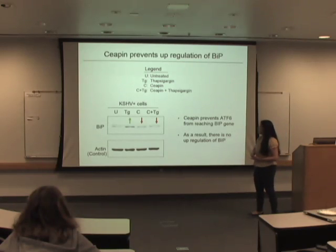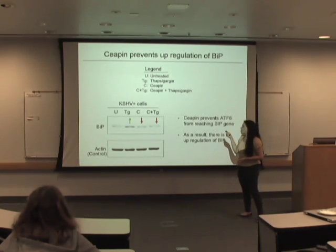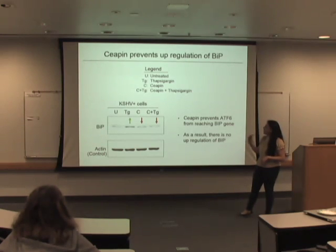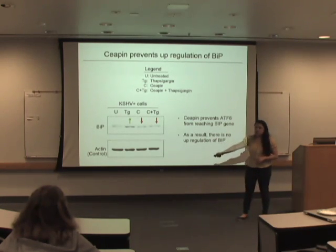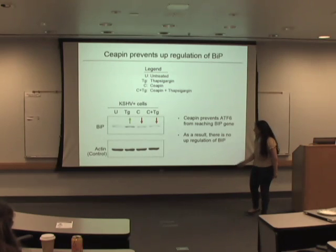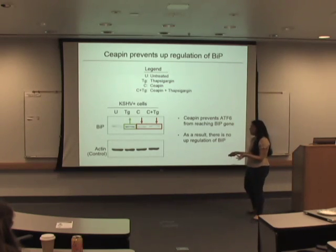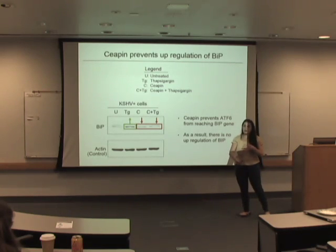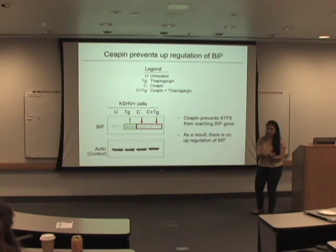Looking at our results, we had four treatments: untreated, TG, Ceapin, and Ceapin with TG. Untreated serves as a control, and actin — a protein always present in the cell — serves as a procedural control confirming the experiment was done correctly, as all actin bands are approximately the same size. As you can see, the TG band is darker than the others, showing more BIP, indicating more cell stress. But when you add Ceapin, it's preventing ATF6 from going up, so it's preventing BIP from going up — even though you're having cell stress. This shows that the drug is working.